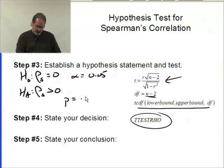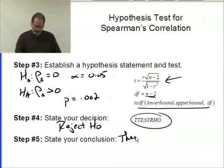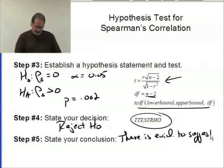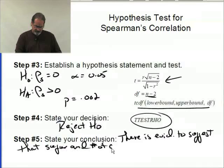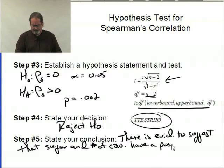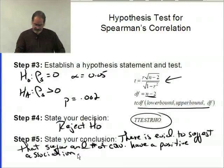So my P-value is 0.002. My decision would then be to reject the null hypothesis. And the conclusion is that there is evidence to suggest that sugar and number of cavities have a positive association. Now positive does not mean good. It simply means the correlation is positive. As one increases, what we see happening is the other increases.